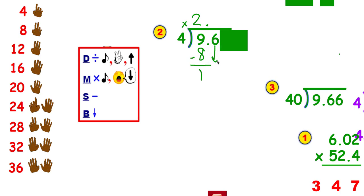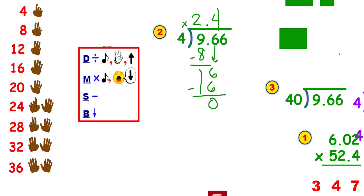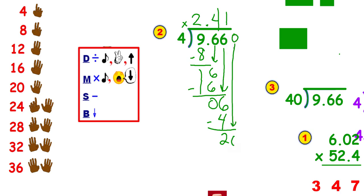Down comes my next number. How many groups of 4 can I get out of 16? I can get 4. Make sure you're lining your numbers up — keep them neat. 4 times 4 is 16, I have nothing left over. Down comes my 6. How many groups of 4 out of 6? I can get 1. 1 times 4 is 4. I have 2 left over. I cannot have a remainder because I have a decimal point, so I add a 0 and drop it down. I can get 5 groups of 4 out of 20, with no remainder. So my answer is 2 and 415 thousandths.